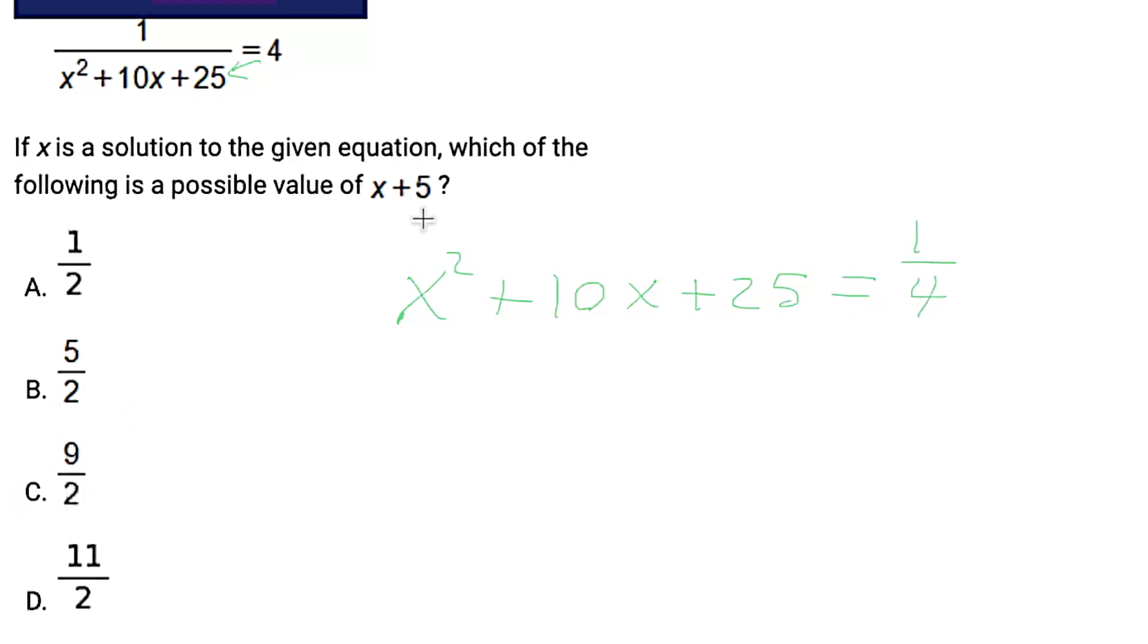Now, how are we going to get x plus 5? Well, we've got a quadratic on the left side of the equation here, so let's factor it. And remember, when we factor, we're looking for two numbers that add up to this value next to x and two numbers that multiply to this value at the end. You can always remember your base formula is ax squared plus bx plus c. So you're trying to add up to the b value, multiply to the c value.